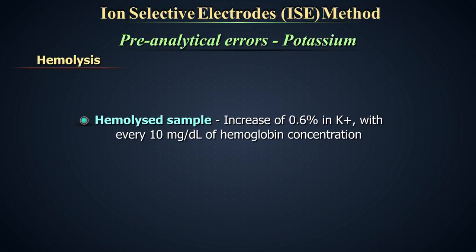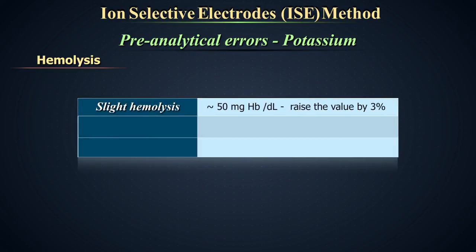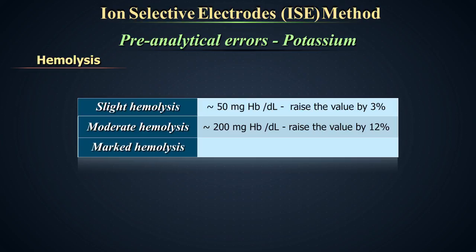Hemolysis. If the sample is hemolyzed, an increase of 0.6% in potassium with every 10 mg per deciliter of hemoglobin concentration can be expected. Thus, slight hemolysis approximately 50 mg hemoglobin per deciliter can raise the value by 3%. Marked hemolysis that is greater than 500 mg hemoglobin per deciliter can raise the value by 30%.